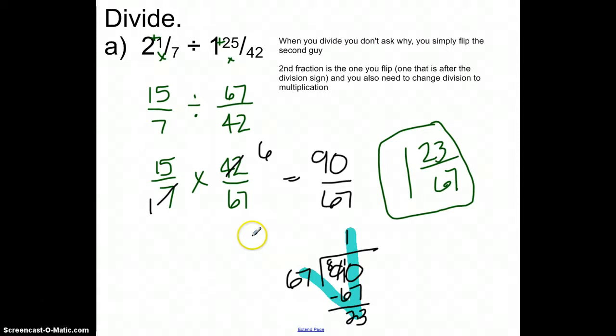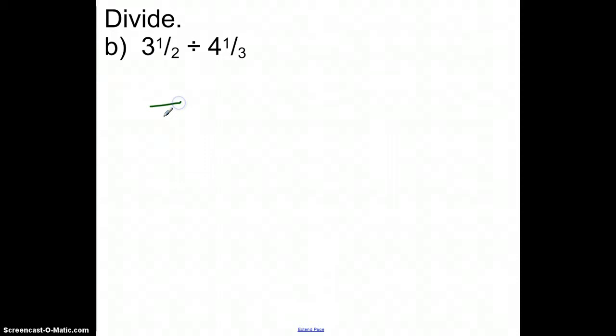Let's take a look at this one. Again, we're going to start with division. We have to make them into fractions. So 2 is going to be the bottom number in the first one, 3 is going to be the bottom number in the second one. 2 times 3 is 6, plus 1 is 7. 3 times 4 is 12, plus 1 is 13.